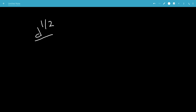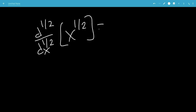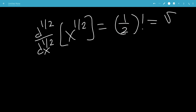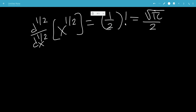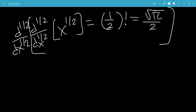So now the half derivative of x to the 1/2 will be 1/2 factorial, which is the square root of pi over 2. So now let's take the half derivative on both sides. The half derivative of the half derivative is just the whole derivative — the first derivative — of x to the 1/2.